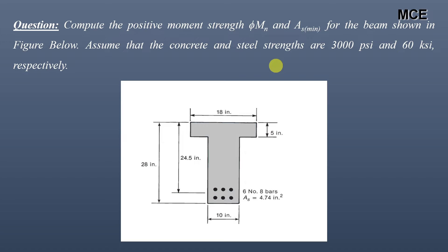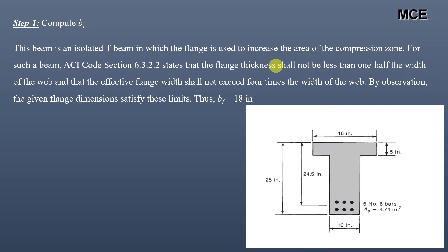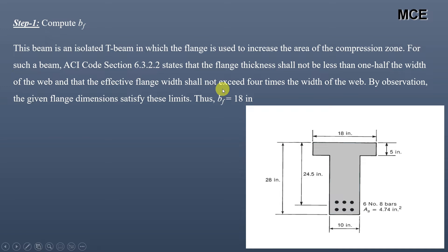The first step is to find the effective width of the beam. Since this is an isolated T-beam where the flange increases the compression zone area, the ACI code states that the flange thickness shall not be less than one-half the width of the web, and the effective flange width shall not exceed four times the width of the web. This beam satisfies these limits, so we take the effective width as 18 inches, which is already given in the question.